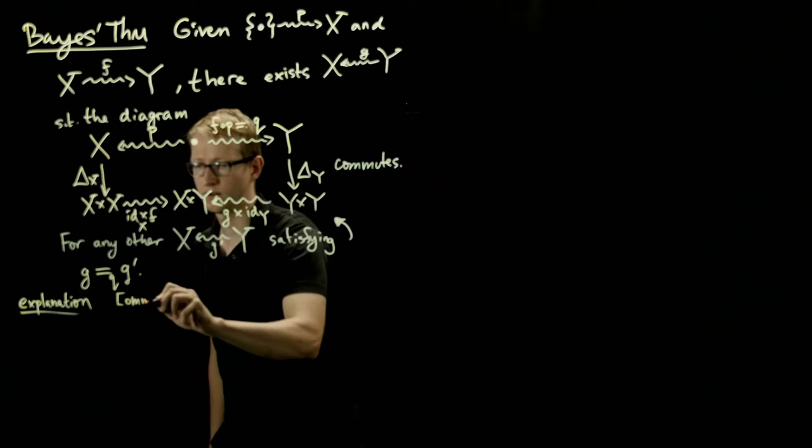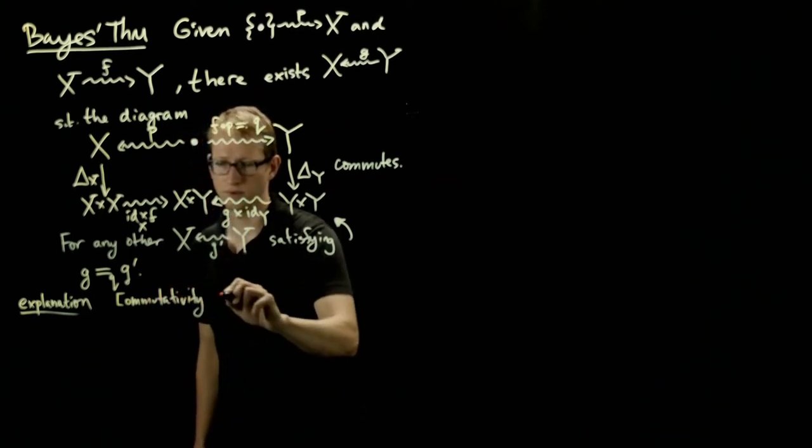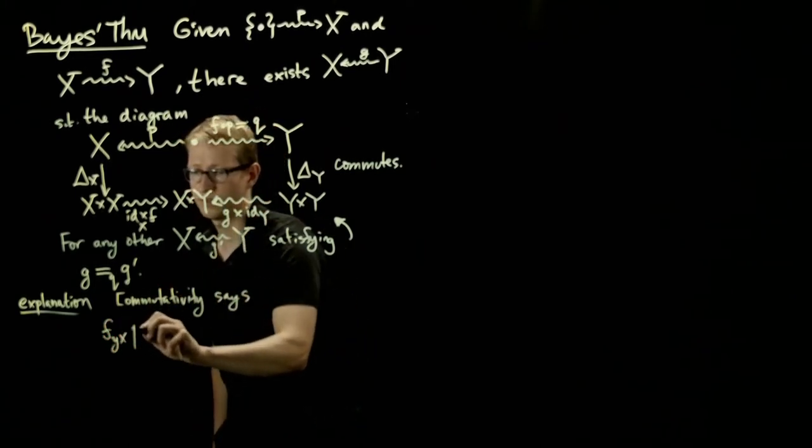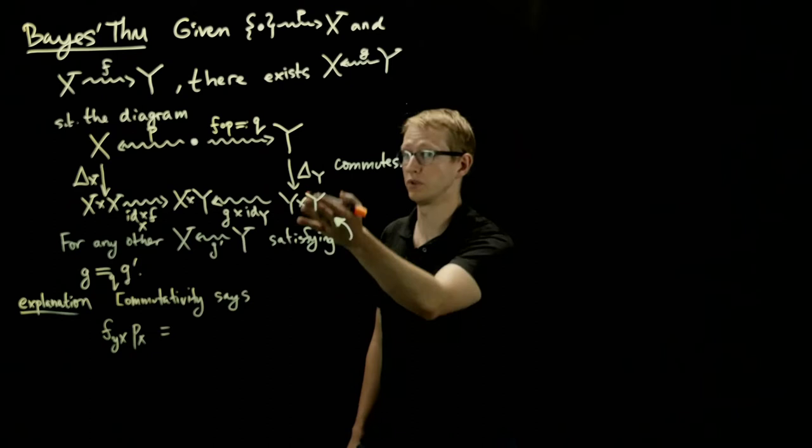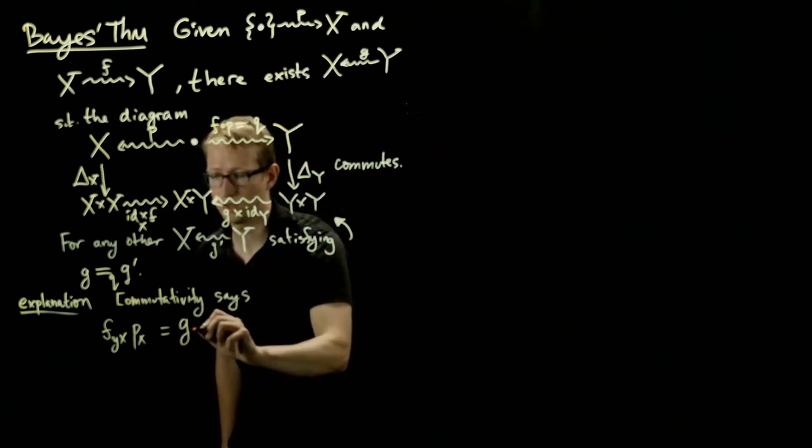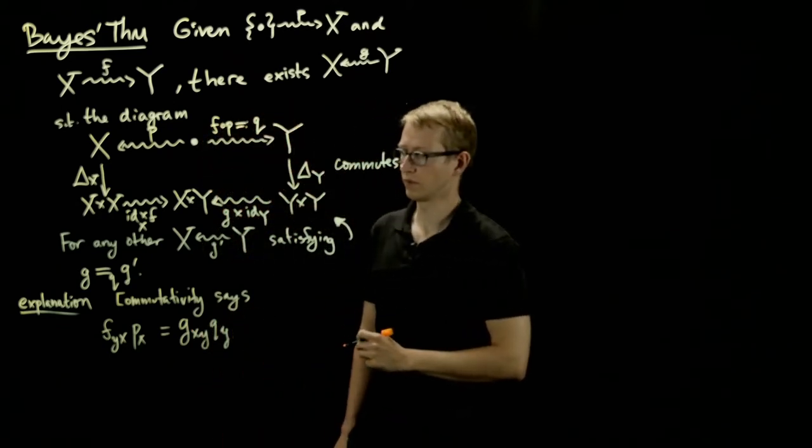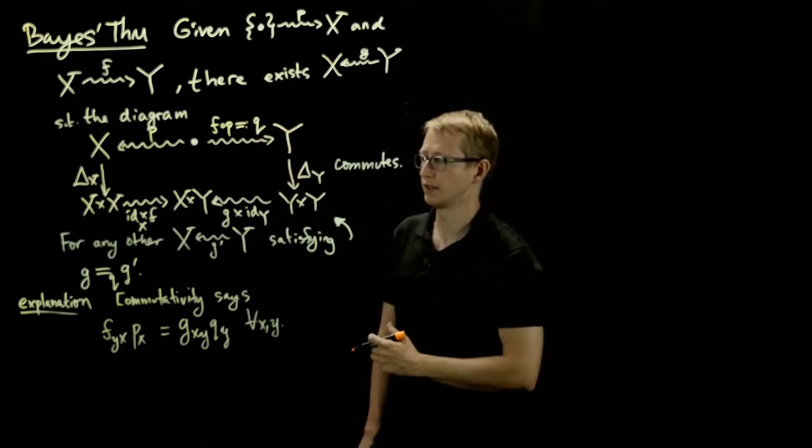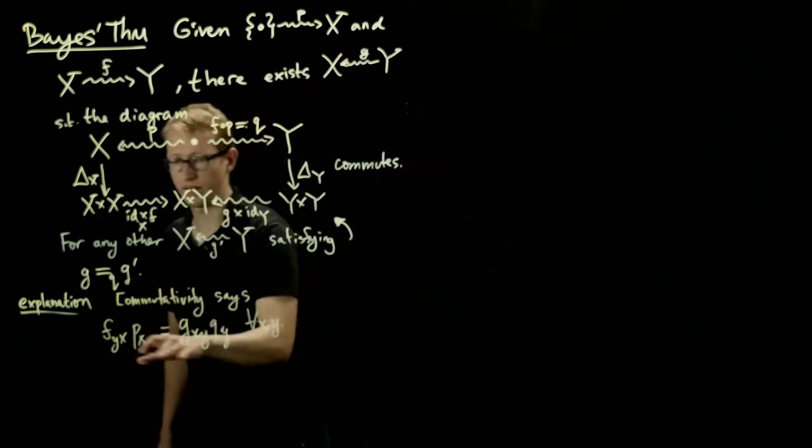So commutativity says that f(y,x) times p(x) equals, and if we did that same calculation but on the right-hand side of this diagram it looks almost the same, it's just that the g p is on the other side. Nevertheless we still get g(x,y)q(y). And this holds for all x, y. Of course x is in X and y is in Y.